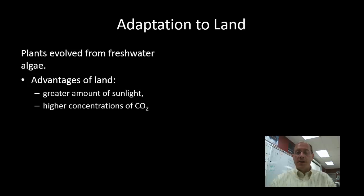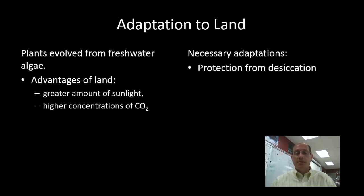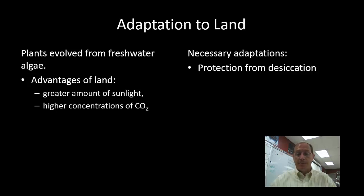Also, carbon dioxide gas exists in lower concentrations in water than in the atmosphere. By living on land, plants are able to take advantage of this higher concentration of carbon dioxide gas, which is used for photosynthesis. In order to live on land, it's necessary that plants have some protection from desiccation, or essentially drying out, and the most successful plants are those that have adaptations protecting them throughout the life cycle.